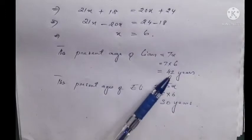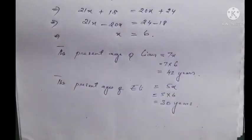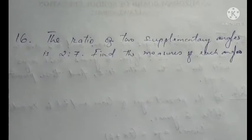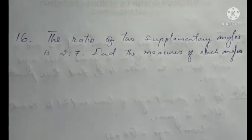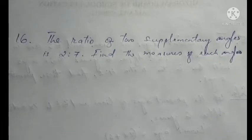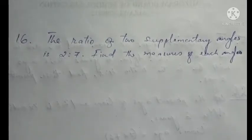Question number 16. The ratio of two supplementary angles is 2 is to 7. Find the measures of each angle. Supplementary angles sum to 180 degrees.